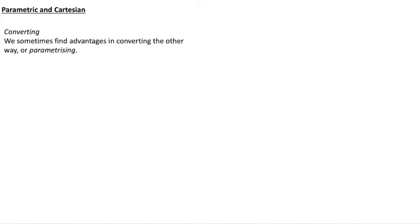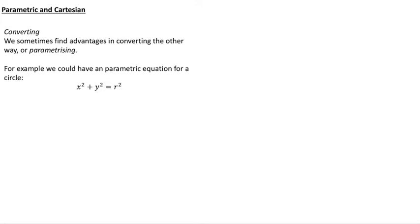Now we may find advantages in converting the other way or using a Cartesian or actually even an implicit equation might be better represented by a parametric equation. So we're going to have a look at the example of the equation of a circle. We've got x² + y² = r², the familiar equation of a circle. And if we think about cos²θ + sin²θ = 1, then we can parameterize this equation using these trigonometric functions.